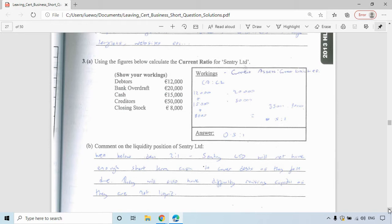Your answer there is 0.5 to one. Now the liquidity position of Sentry LTD, the ideal situation a business wants to find themselves in is to have twice as many current assets as they do current liabilities. So your ideal is two to one. This is well below the ideal of two to one. Sentry LTD will not have enough short-term cash to cover debts as they fall due. They'll have difficulty raising capital as they are not properly liquid. It's a worrying position for them to be in.